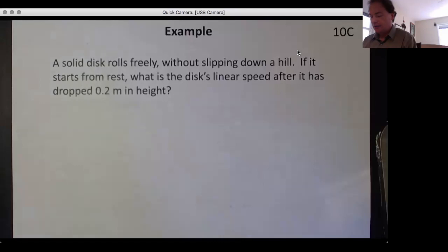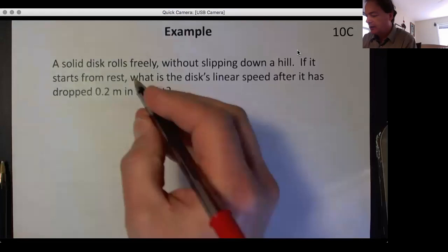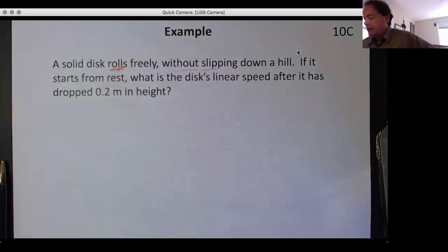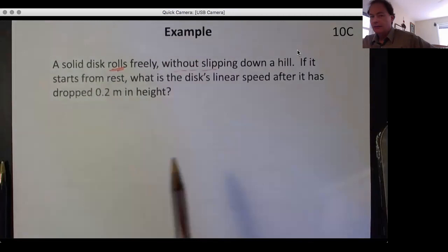A solid disk rolls freely without slipping. So 'rolls' is clear, and 'without slipping' tells us how this is going down, and that means it ties our translational motion to our rotation pretty securely there.